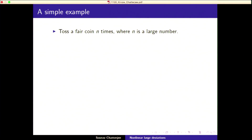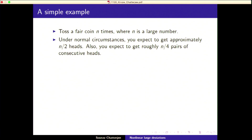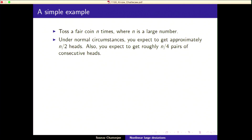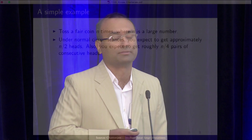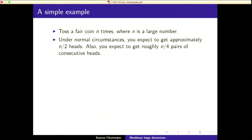A simple example: toss a fair coin n times, where n is some large number. Under normal circumstances, you'd expect to get approximately n/2 heads. You'd also expect the number of times you get two consecutive heads to be roughly n/4 pairs. So that's a simple probabilistic computation.